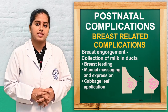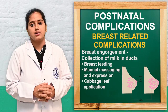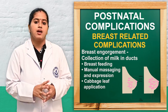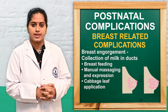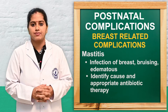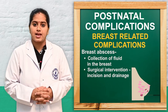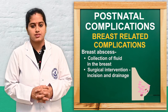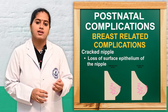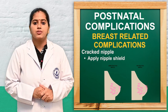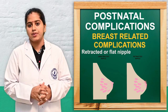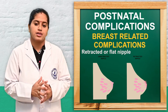The next problem is breast complications. Breast engorgement involves collection of milk in the ducts; management includes asking the woman to feed the baby, cabbage application, hot water application, manual massaging, expression of milk, and demand feeding. Mastitis is inflammation of the breast with bruising and edema; identify the cause and give appropriate antibiotics. Breast abscess involves collection of fluid in the breast, treated with drainage and surgical intervention. Cracked nipple involves loss of surface epithelium of the nipple, managed with a nipple shield. Retracted or flat nipples are managed with massage therapy or manual expression of milk.